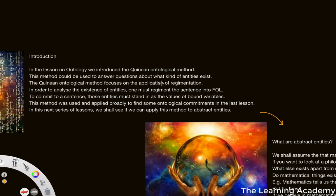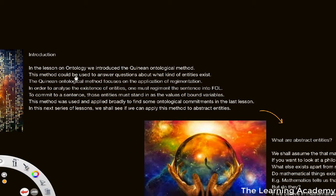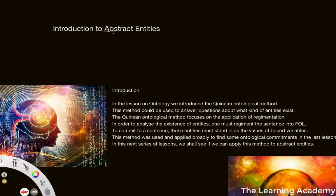What I want to do in this lesson is pick up from where we left off when we were looking at the philosophy of ontology. We're going to take a bit of an introduction to the concept in philosophy of abstract entities. We're going to be recapping the Quinean ontological method for determining what one's ontological commitments should be, and then we're going to look at really what abstract entities are, before exploring what we'll be covering in the next series of lessons on the philosophy of abstract entities.